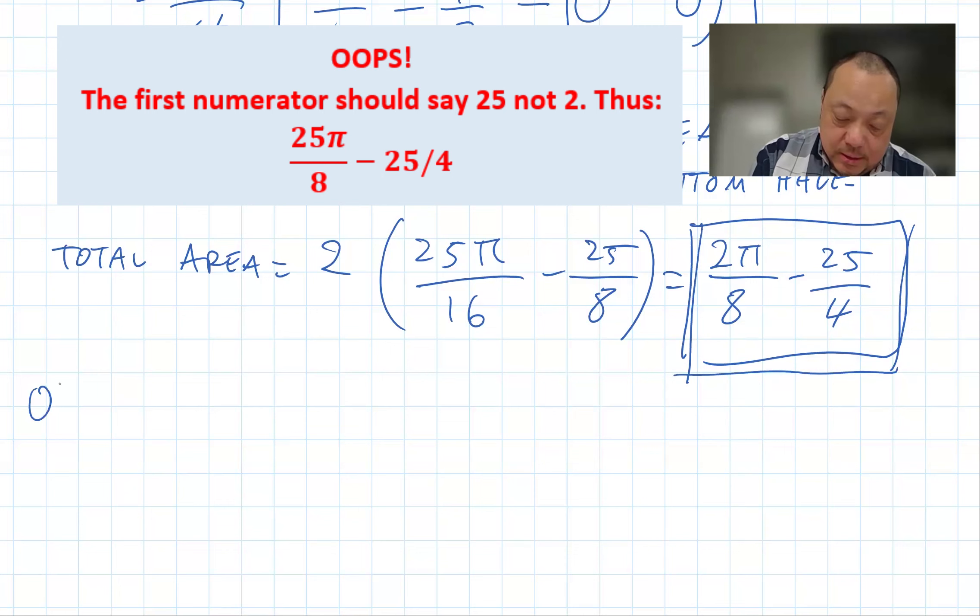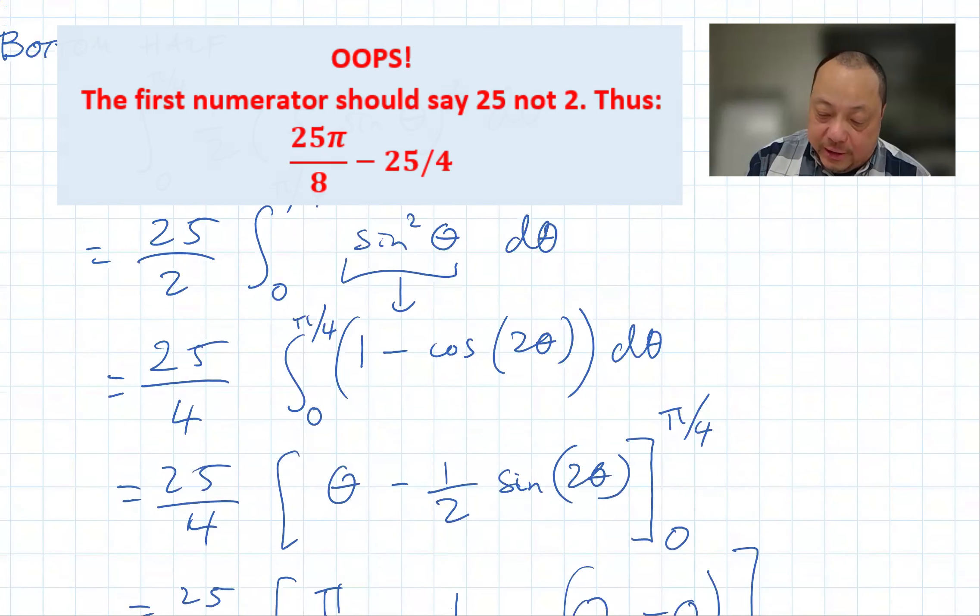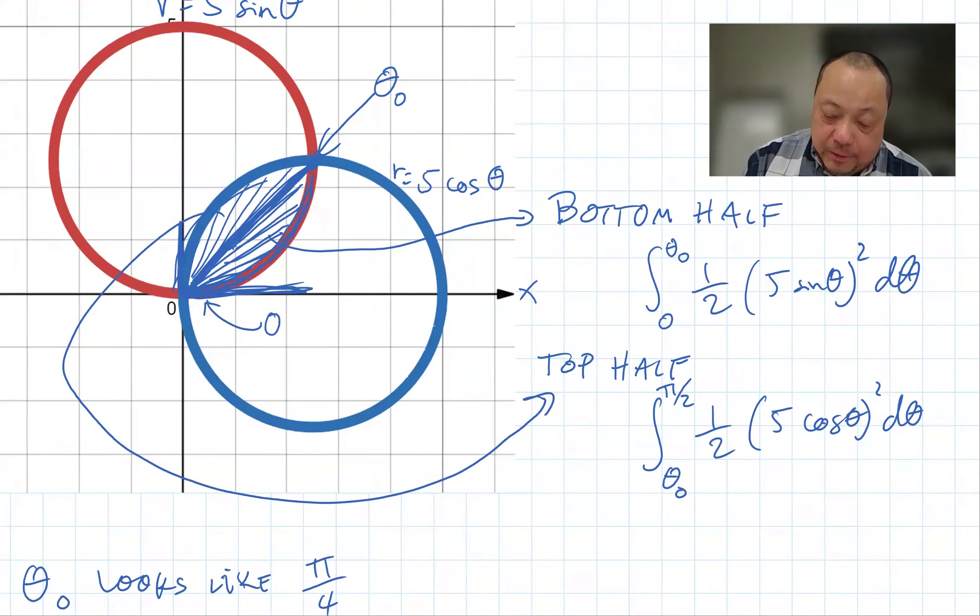Alternatively, you can do the top half separately, and then multiply that by two. And the top half, let's take a look at the graph again. The top half is the blue circle, so it's 5 cosine theta.